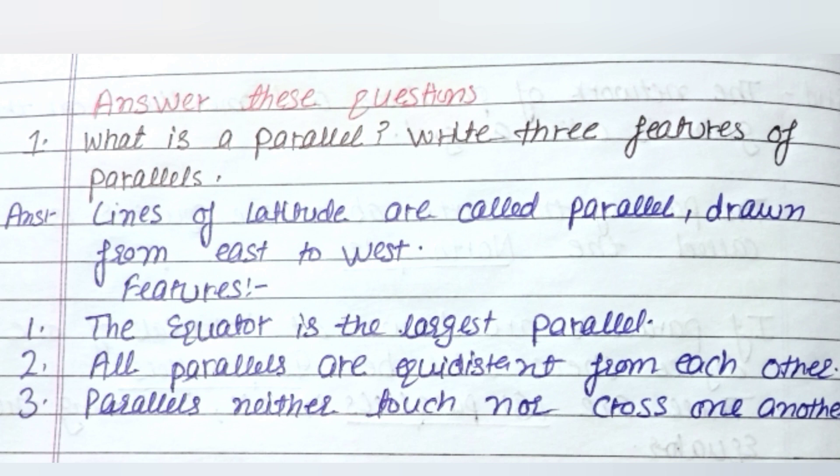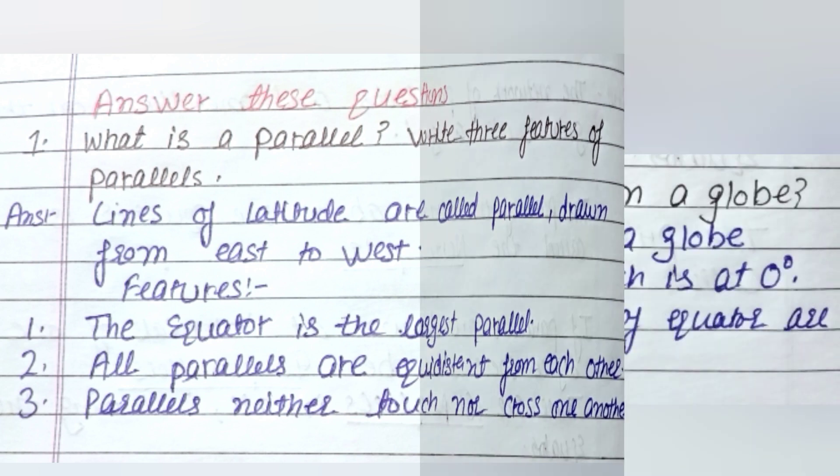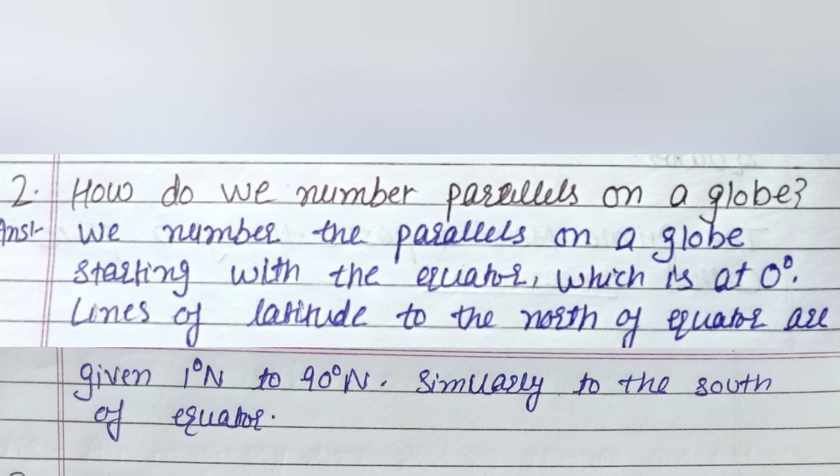Second question is: How do we number parallels on a globe? Answer of this question is: We number the parallels on a globe starting with the equator which is at 0 degrees, lines of latitude to the north of equator are given 1 degree north to 90 degrees north, similarly to the south of equator.